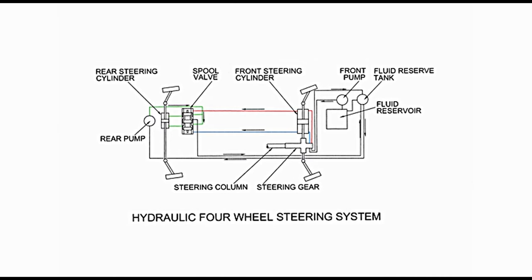This time, fluid is supplied to the front steering cylinder and spool valve through lines shown in red. Hybrid system: It is a combination of hydraulic and electronic system, hence the name hybrid system. It has an electronic control unit or ECU, which is a programmed microprocessor. A single microprocessor is used in the automobile and it controls all the components including the four-wheel steering system.